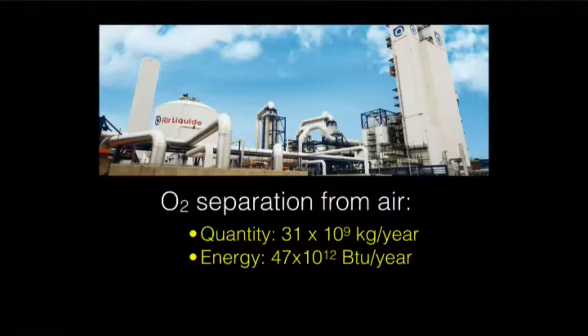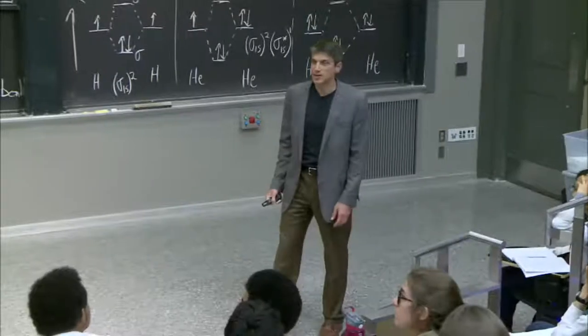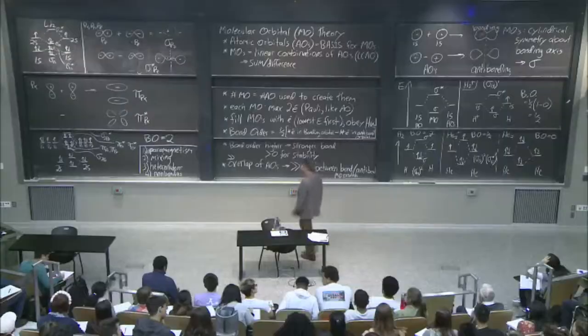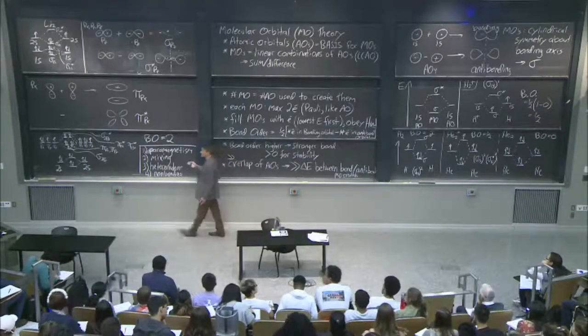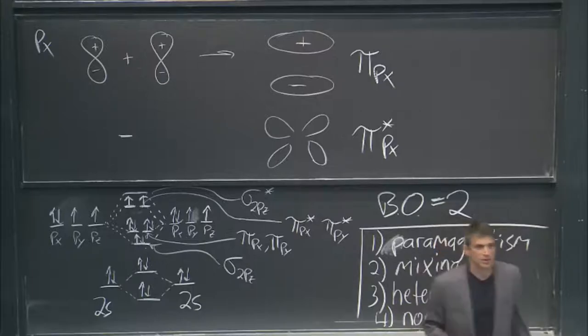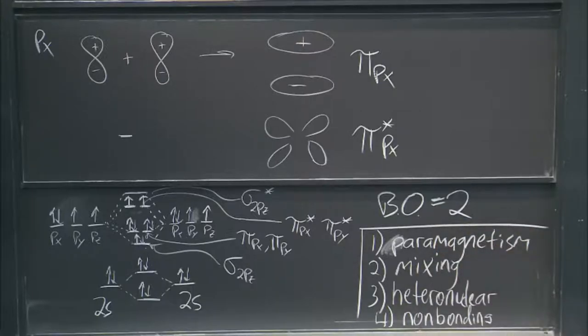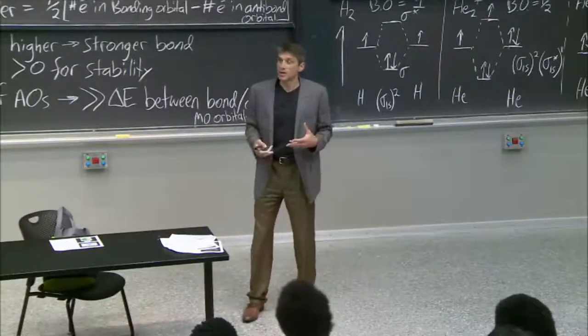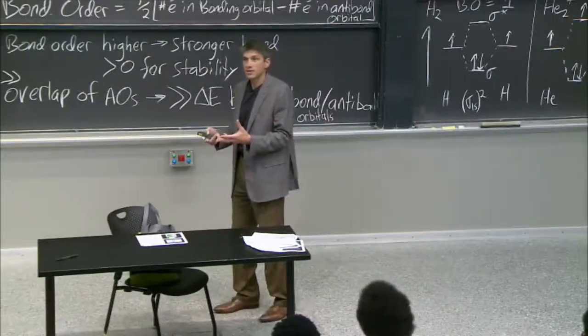And this is how much energy it takes. It's like half a percent of all US energy just to get O2. But what if you could use something like O2's paramagnetism? What if you could use something about the chemistry of O2 to do this separation more efficiently, lower energy, or maybe make a new colander that does that?